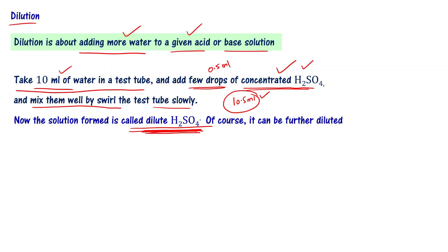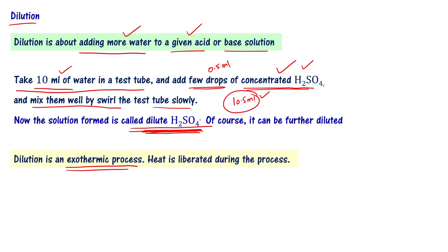You also have to note that dilution is an exothermic process — meaning when you are mixing, heat is going to be liberated. We have to be conscious while diluting either acids or bases since it is an exothermic process. A lot of heat can get generated. For example, if you're holding a test tube and mixing, excessive heat generated could cause you to drop it — that is a risk one has to worry about.